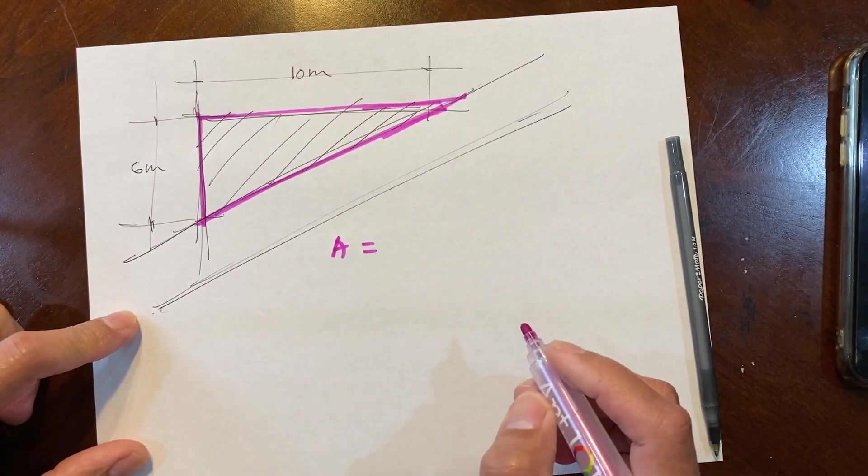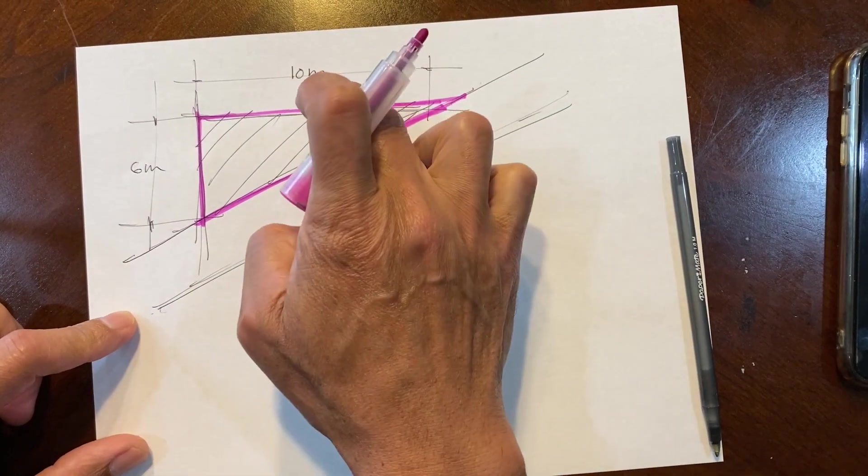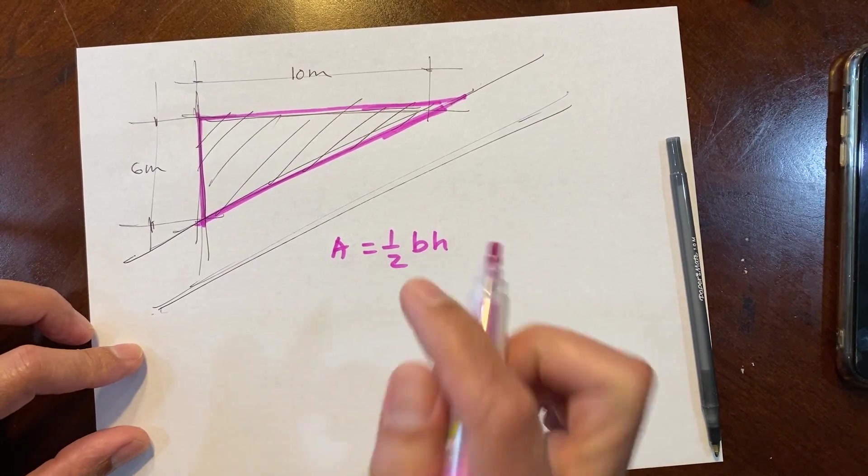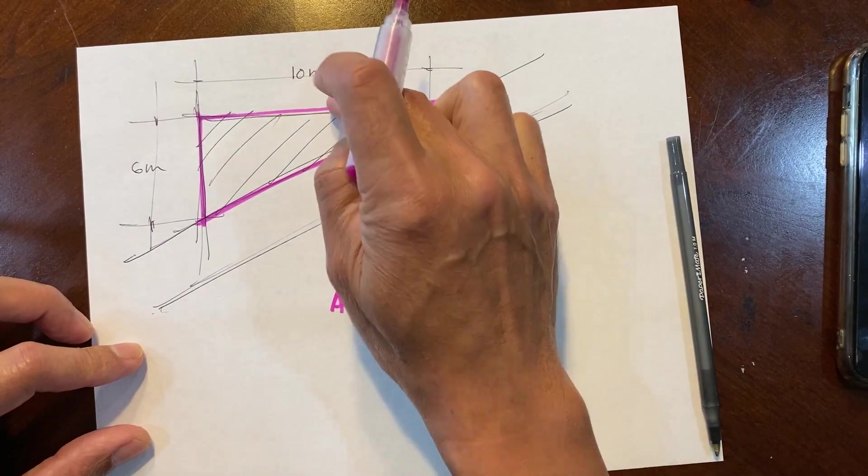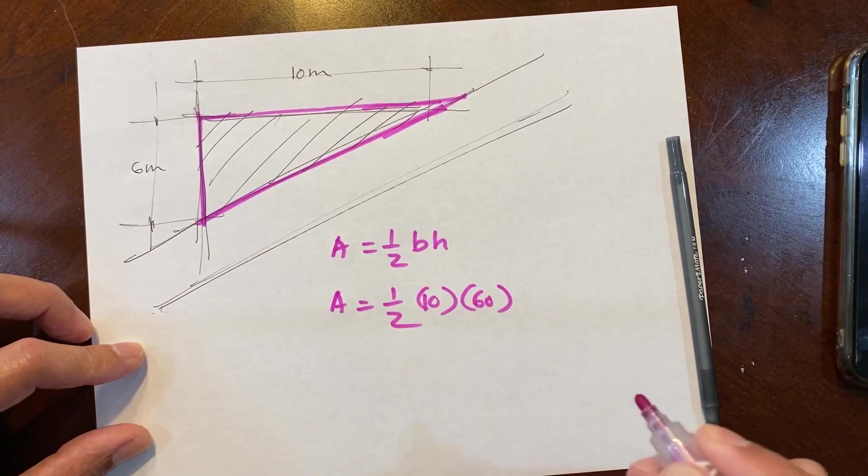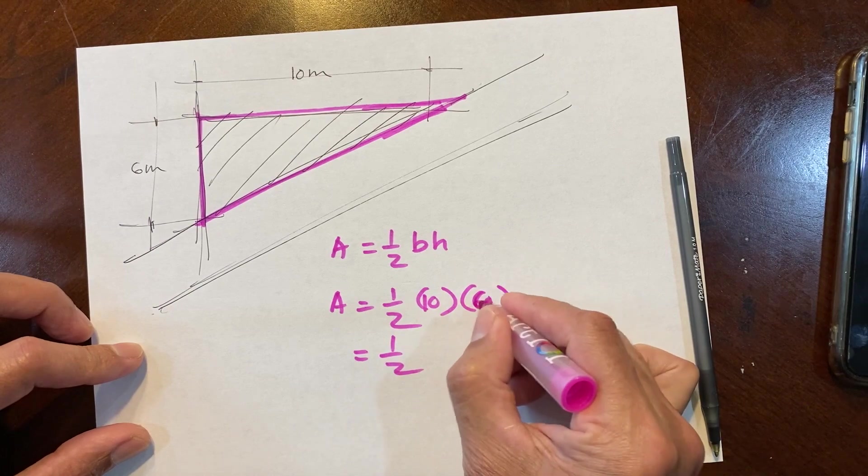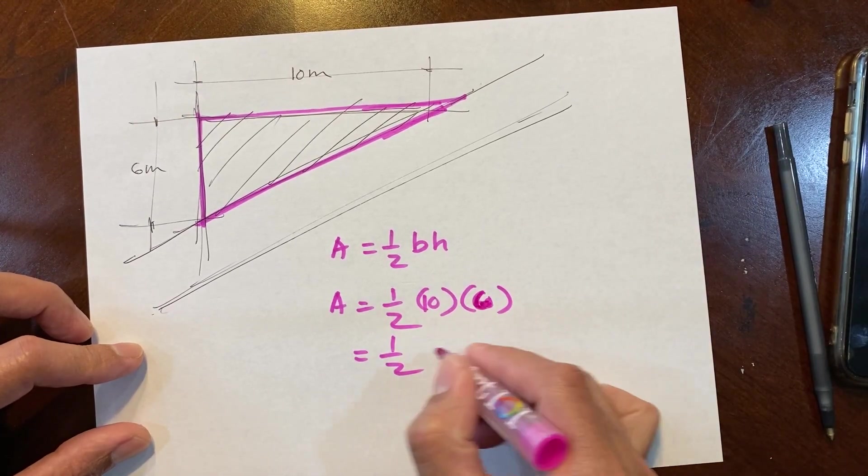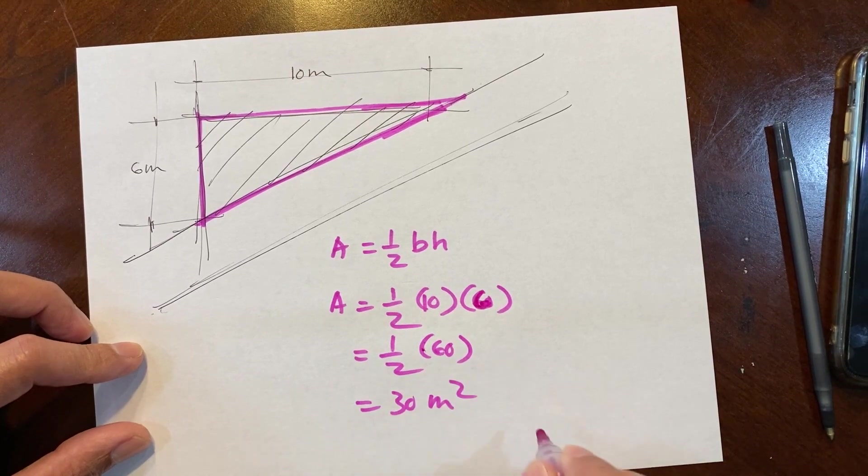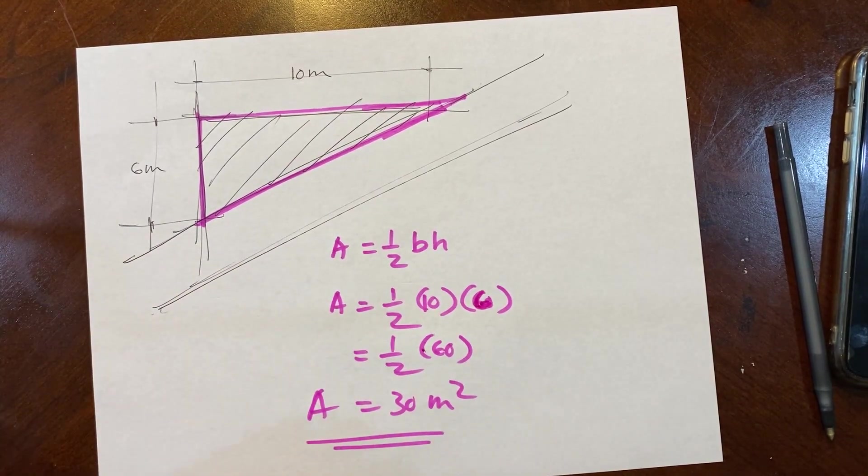Area of triangle will be one-half base times height. So base is 10 and height is 6 meters. We have everything. Area equals one-half, base of 10 meters, times height of 6. One-half times 10 times 6 equals 60, so one-half of 60 will be 30 square meter. That is our triangular lot.